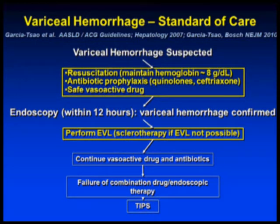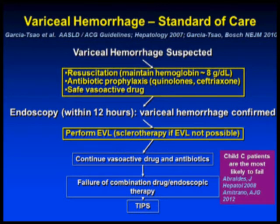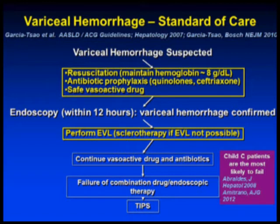That is the standard of care. If you fail this, you go on to TIPS as second-line therapy. But who are the patients most likely to fail standard therapy? Child C patients are always the sicker ones — most likely to fail and to have the highest portal pressure. This brought up the idea of putting in a TIPS before the patient fails — the concept of early TIPS or preemptive TIPS.